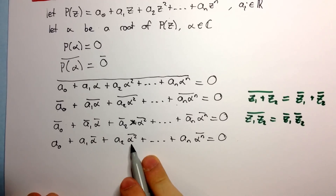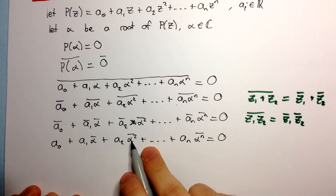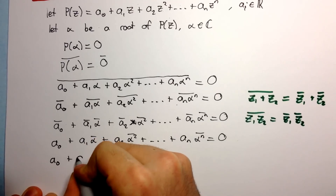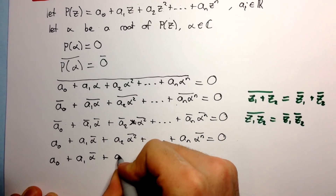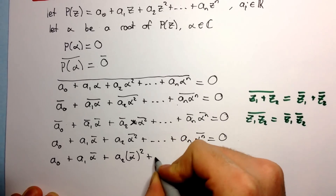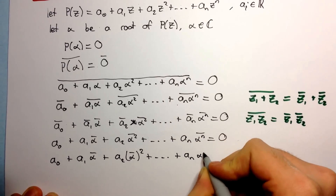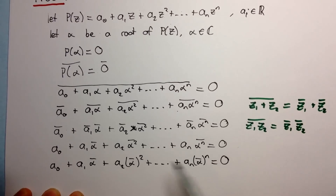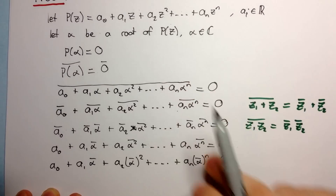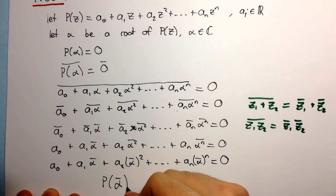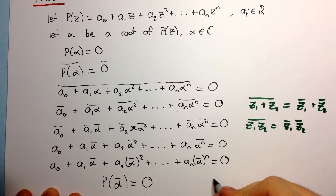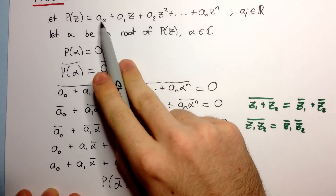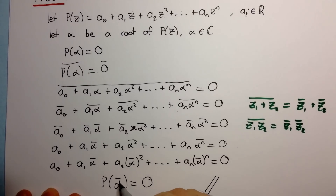Now we use one last property: the conjugate of a power is equal to the power of the conjugate. So we get A₀ plus A₁ alpha bar plus A₂ alpha bar squared plus up to AN alpha bar to the N is equal to zero. You might recognize this as substituting alpha bar into this polynomial, so that's equal to P of alpha bar equals zero. This completes the proof because we've shown that if alpha is a complex root of a polynomial with real coefficients, then its complex conjugate alpha bar is also a root.